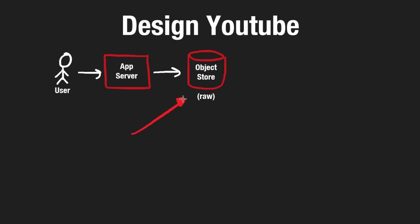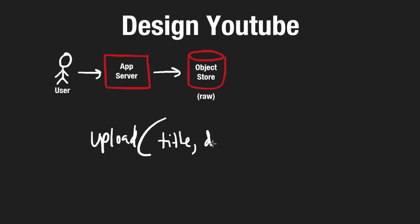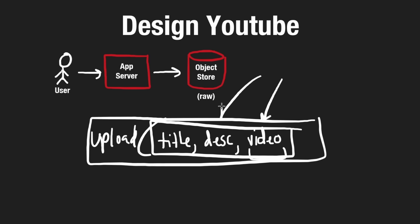Storing the videos in object storage is fine, but what about the actual metadata associated with every video? Going over what the API for uploading would look like, it would obviously have a title, a description, and the actual video content itself — maybe something like an MP4. That's what's going to actually be stored in object storage. There could be other things we store like tags. But the important part isn't knowing every single field — it's understanding the overall structure.